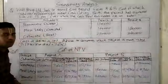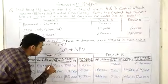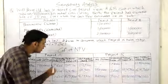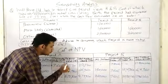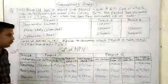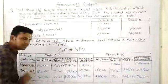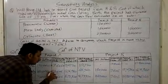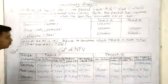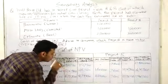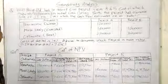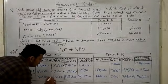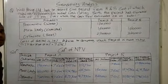We use the same method for calculating the present value: 1,20,000 into 7.606, our PVIF, equals present value of 9,12,720 for pessimistic situation. For most likely, 1,60,000 into 7.606 equals 12,16,960. For optimistic, 2,20,000 multiplied by 7.606 equals 16,73,320.